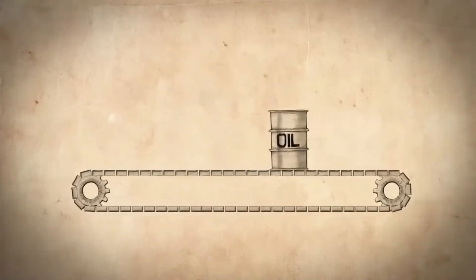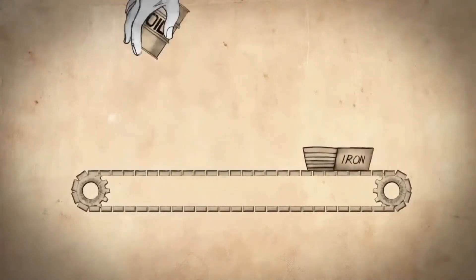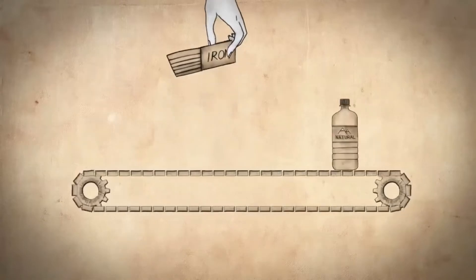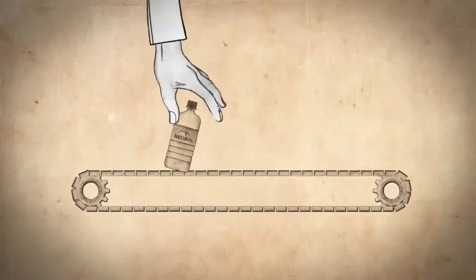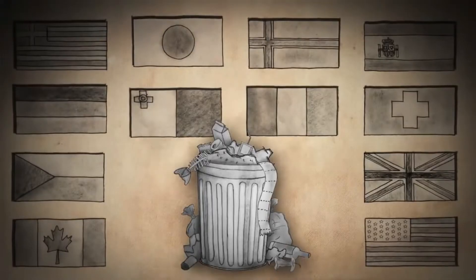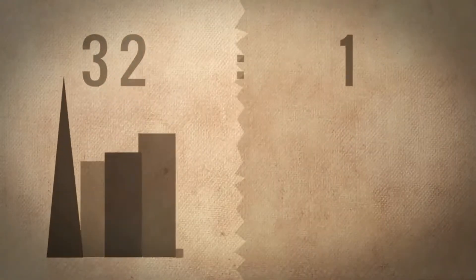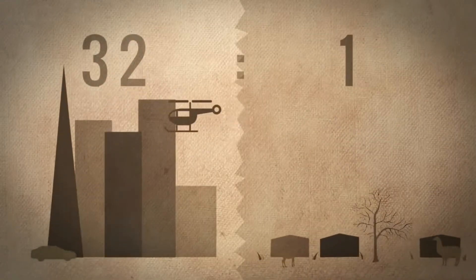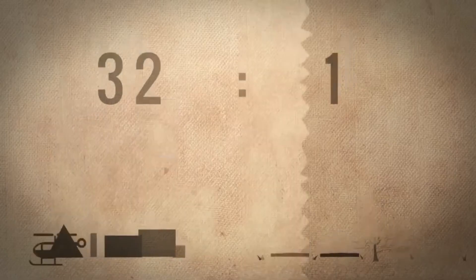The average rates at which we consume resources, such as oil and metals, and produce waste, like plastic and greenhouse gases, are about 32 times higher in North America, Western Europe, Japan, and Australia than they are in the developing world. 32 to 1 captures the difference in consumption between the first world and the third world. This little ratio has huge consequences.